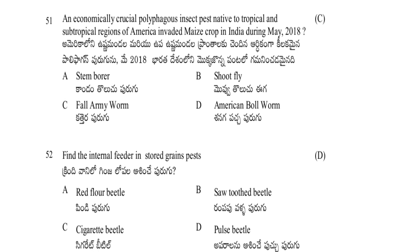An economically crucial polyphagous insect pest native to tropical and subtropical regions of America invaded maize crop in India during May 2018. Options: tambourine, shoot fly, fall armyworm, American bollworm. The answer is fall armyworm.